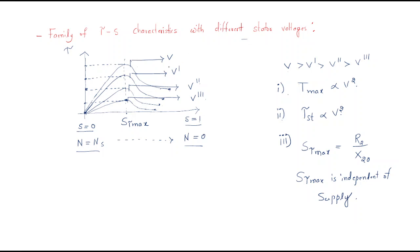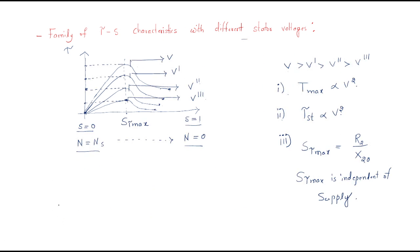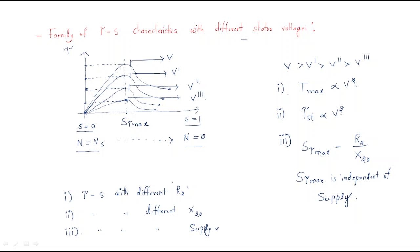Completely, we have three families of torque-slip characteristics: first, with different rotor resistances R2; second, with different rotor leakage reactances X2; and third, with different stator voltages. In all three cases, we study how torque varies with slip under different rotor parameters and supply voltage conditions, as the remaining terms in the torque equation are constants. I hope all of you understand the session, thank you.